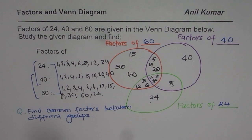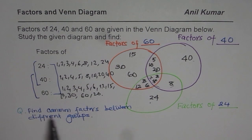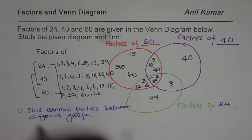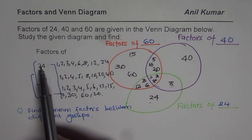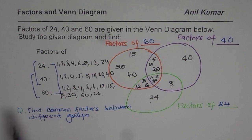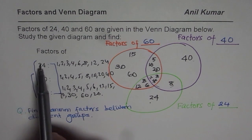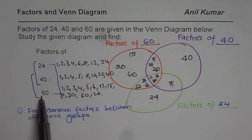Now, as an exercise, write down common factors between different groups. Different groups will be common factors between 24 and 40. Then, you write common factors between 40 and 60, 24 and 60, and common factors between all three of them. Do that. And then, you can check your answer from the next video.